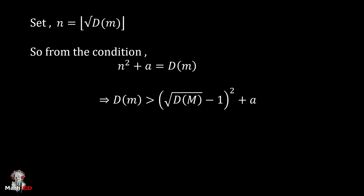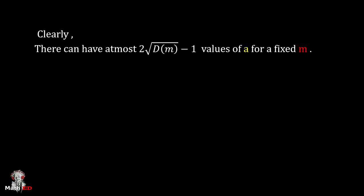From here we can say that a is less than 2√D(m) - 1. So clearly there can have at most 2√D(m) - 1 values of a for a fixed value of m.